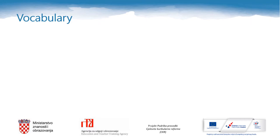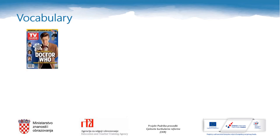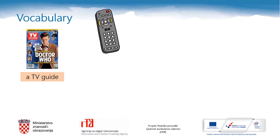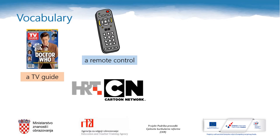Let's take a look at some vocabulary that we'll need for today's lesson. What is this? That's right, it is a TV guide. What about this one? This is my favourite toy. Yes, you are right — it is a remote control, or simply remote. And this picture? Excellent — TV channels. That's right. What is your favourite TV channel?